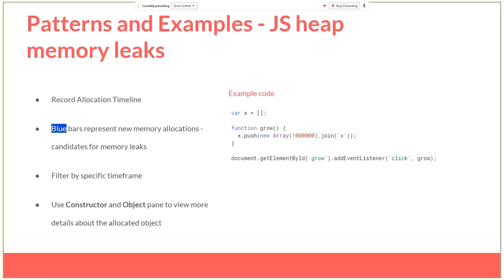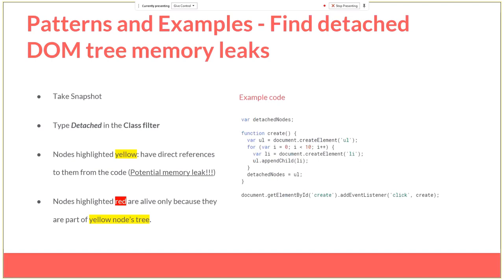With JavaScript memory leaks, we can also record an allocation timeline. With this tool, we can see the exact time where some action happens and the result is an allocation of memory. The blue bars represent new memory allocations, and inside these bars we check if something bad is happening and clear possible memory leaks.